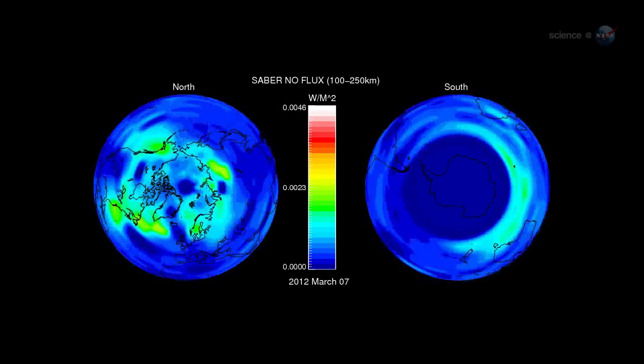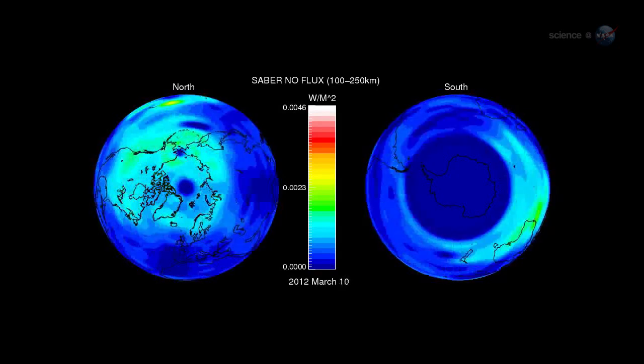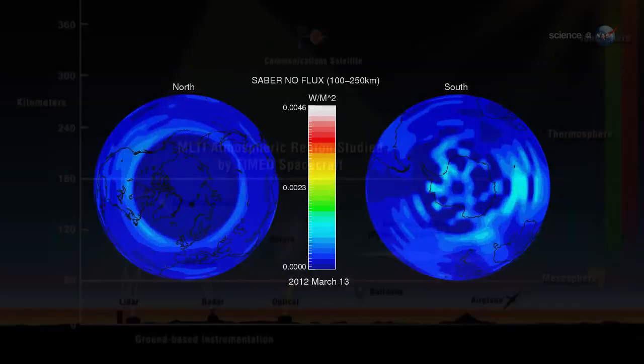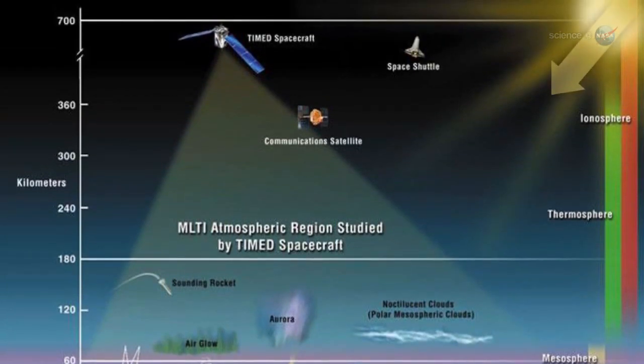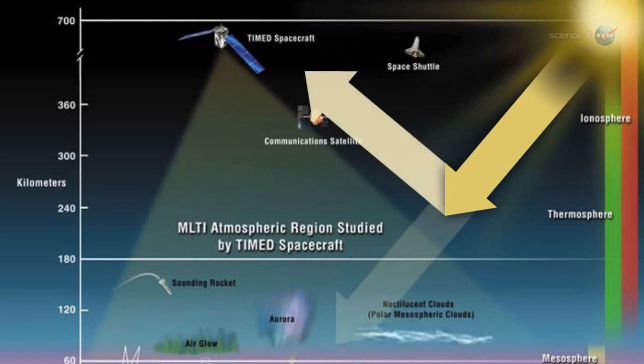For the three-day period, March 8th through 10th, the thermosphere absorbed 26 billion kilowatt hours of energy. Infrared radiation from CO2 and NO, the two most efficient coolants in the thermosphere, re-radiated 95% of that total back into space.